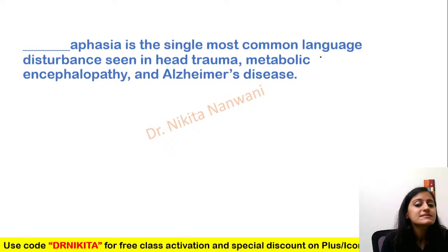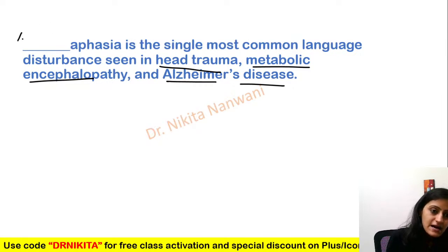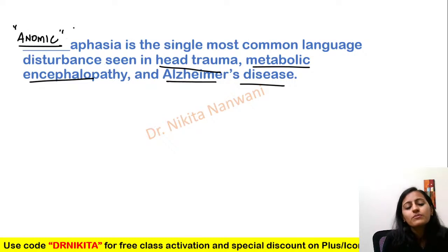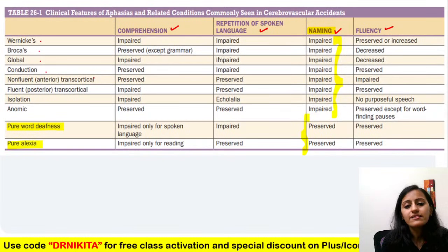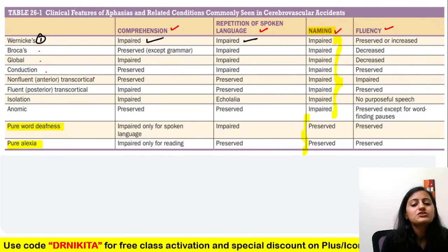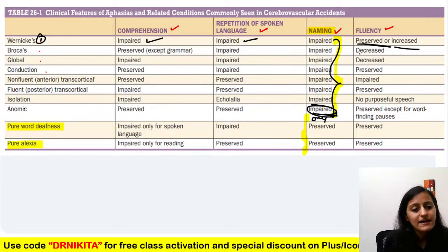What is the single most common language disturbance seen in head trauma, metabolic encephalopathy, and Alzheimer's disease? It is anomic aphasia. Remember — in Alzheimer's, naming is affected; in metabolic states, the patient cannot name. So anomic aphasia is the single most common language disturbance.